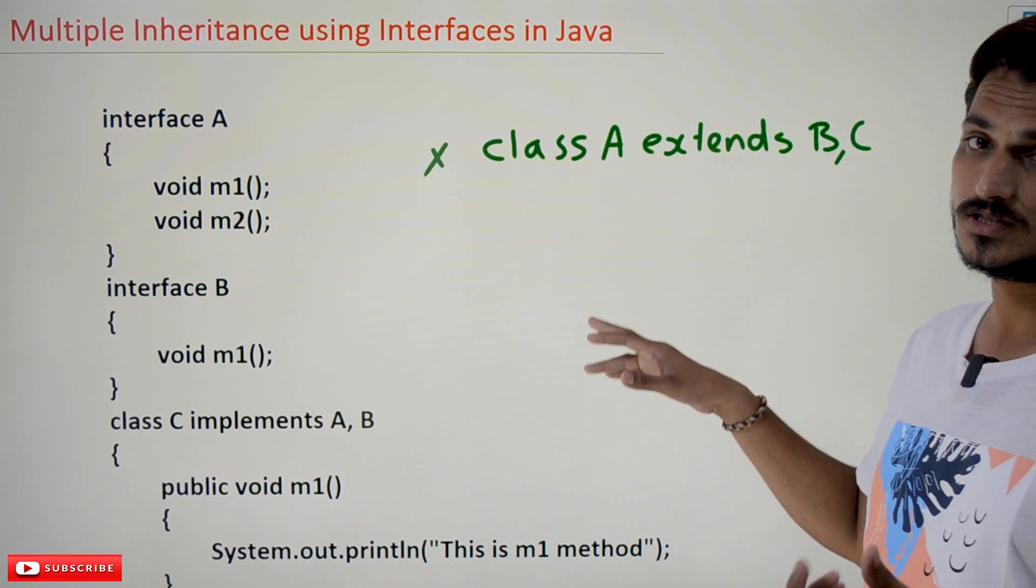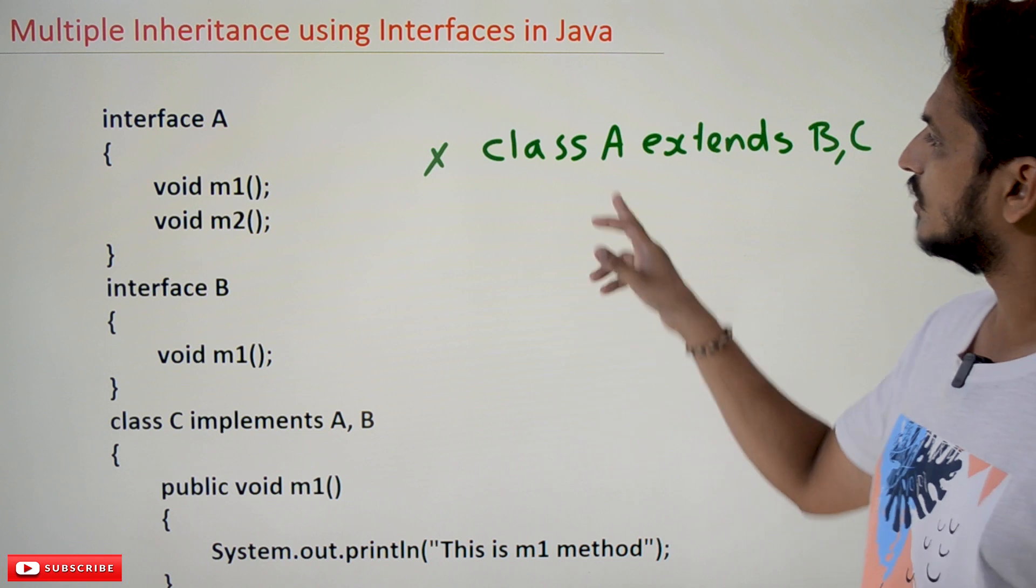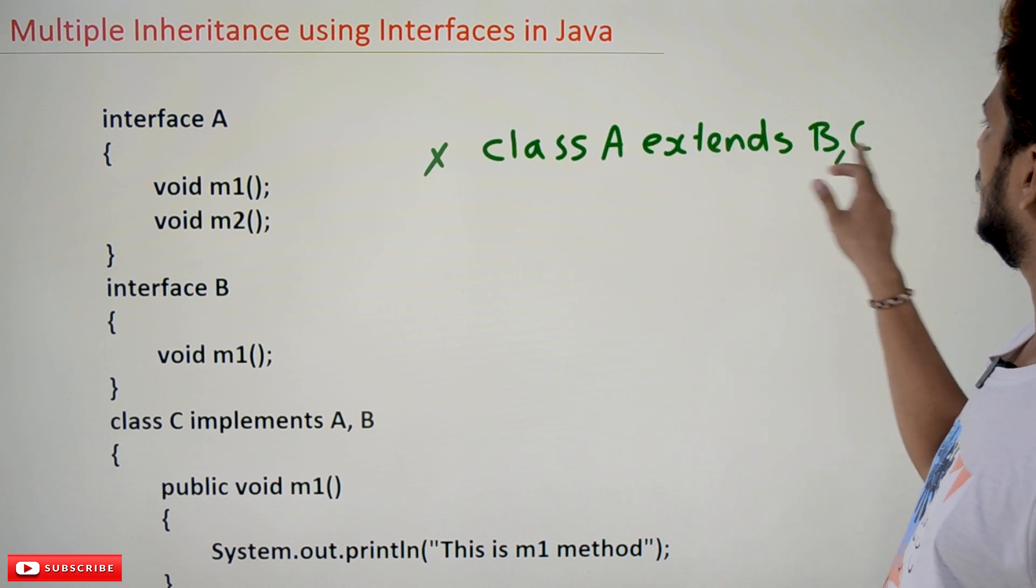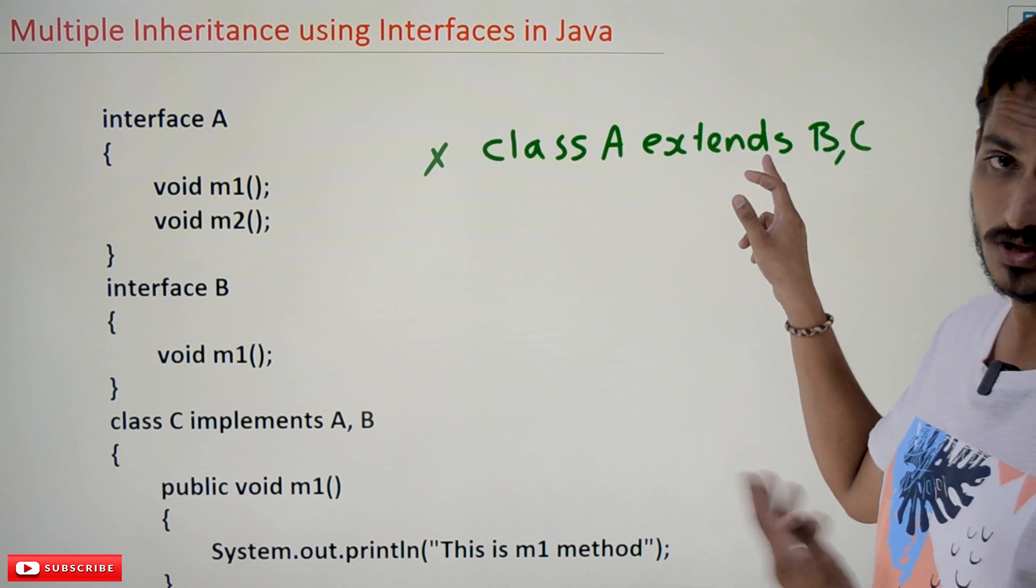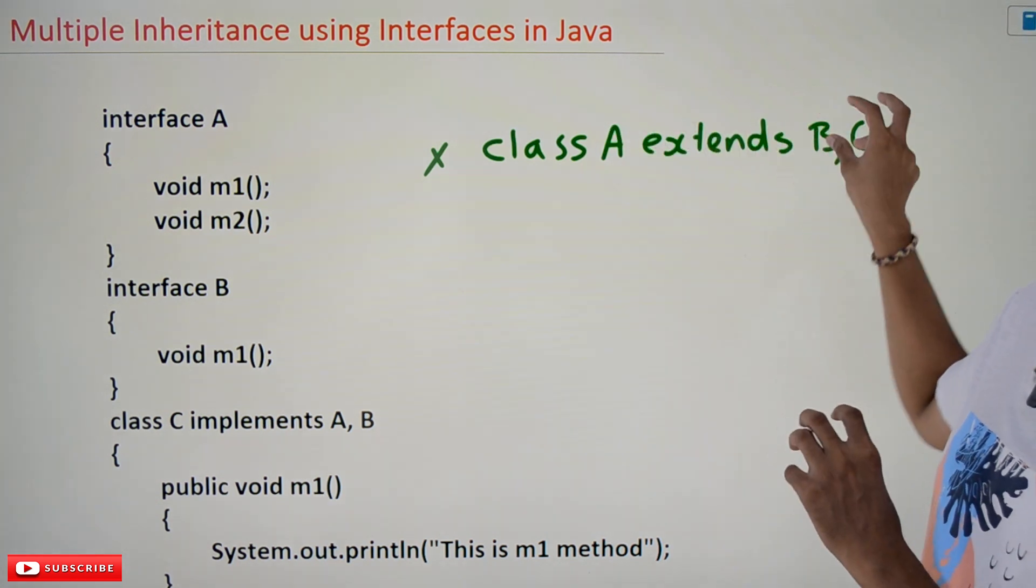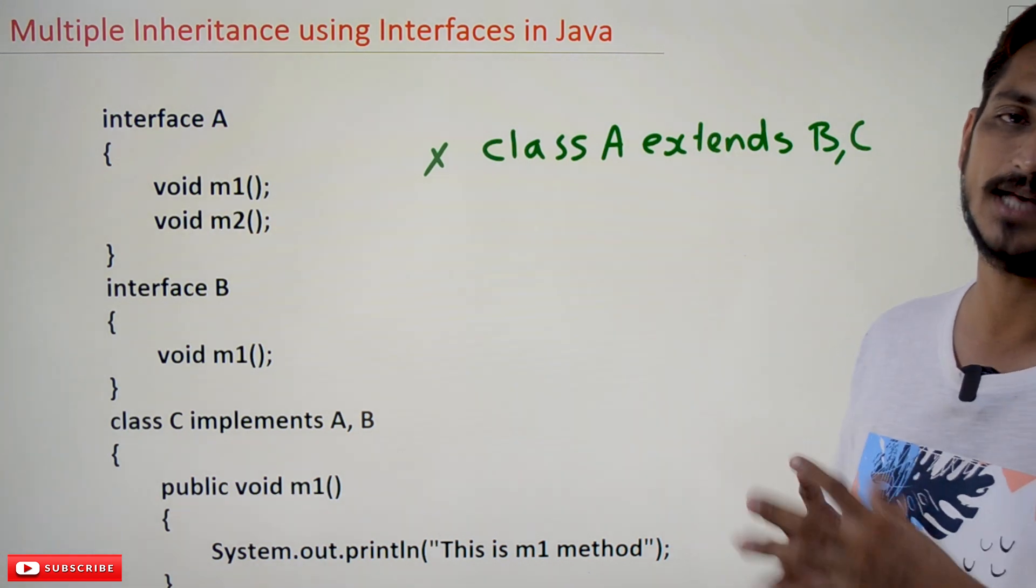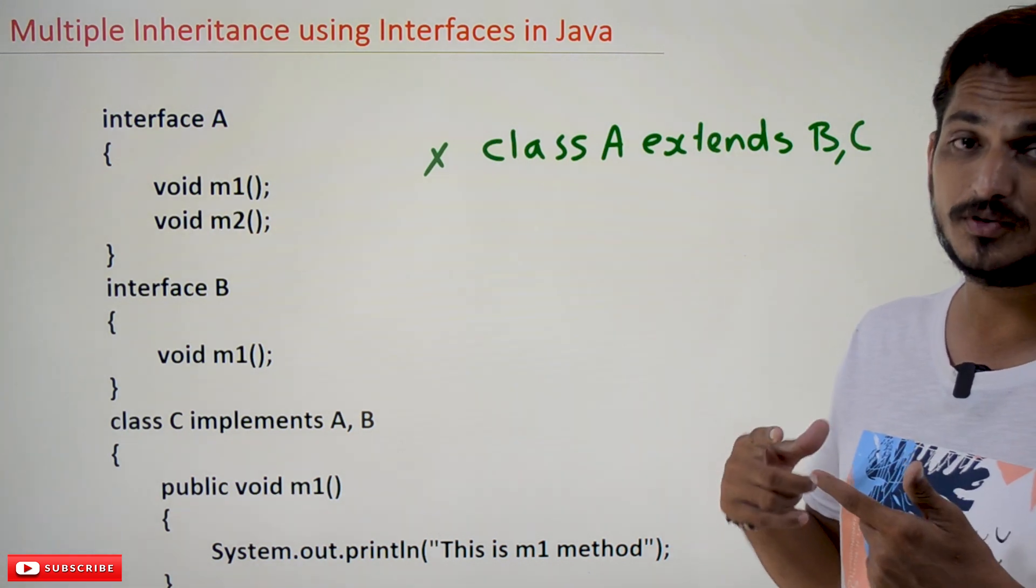Multiple inheritance is not allowed using classes. For example, class A extends B, C - where A inherits two classes, B and C - this is not allowed using classes. But this concept is allowed with interfaces.